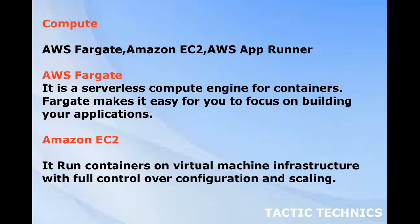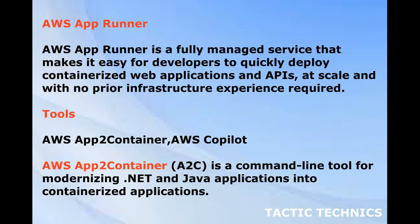Compute. AWS Fargate. Amazon EC2. AWS App Runner. AWS Fargate is a serverless compute engine for containers. Fargate makes it easy for you to focus on building your applications. Amazon EC2 runs containers on virtual machine infrastructure with full control over configuration and scaling. AWS App Runner is a fully managed service that makes it easy for developers to quickly deploy containerized web applications and APIs, at scale and with no prior infrastructure experience required.